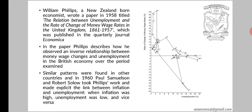The same pattern was found in other countries, and in 1960, Paul Samuelson and Robert Solow took Phillips's work and made explicit the link between inflation and unemployment: when inflation was high, unemployment was low, and vice versa.